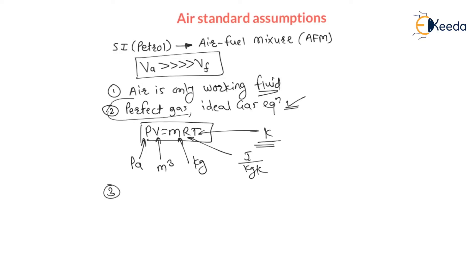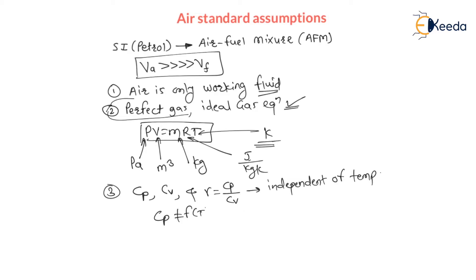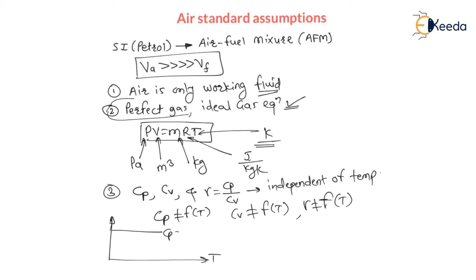The third assumption is: specific heat at constant pressure Cp, specific heat at constant volume Cv, and the specific heat ratio gamma (Cp/Cv) are not functions of temperature — that is, they are independent of temperature. In actual conditions all these values are a function of temperature, but here we are assuming Cp, Cv, and gamma remain constant with any change in temperature.